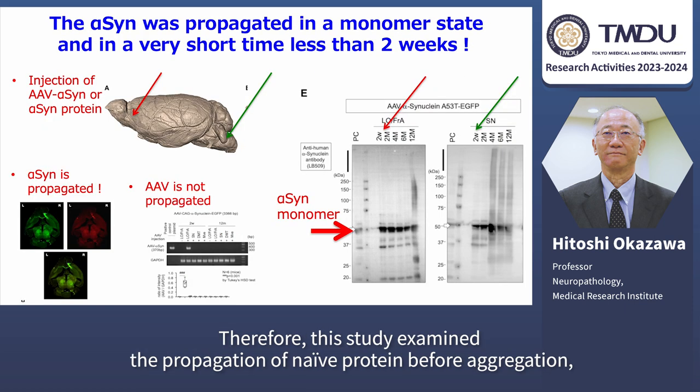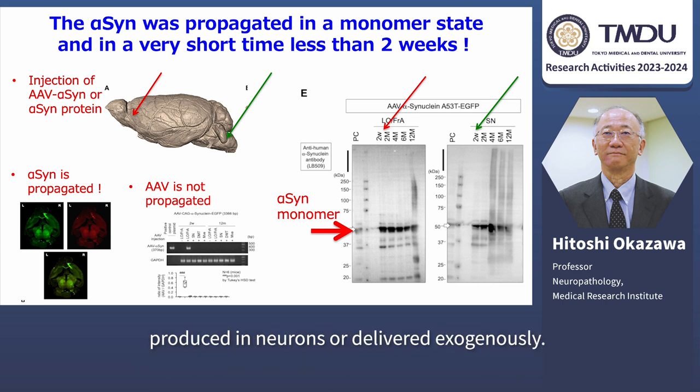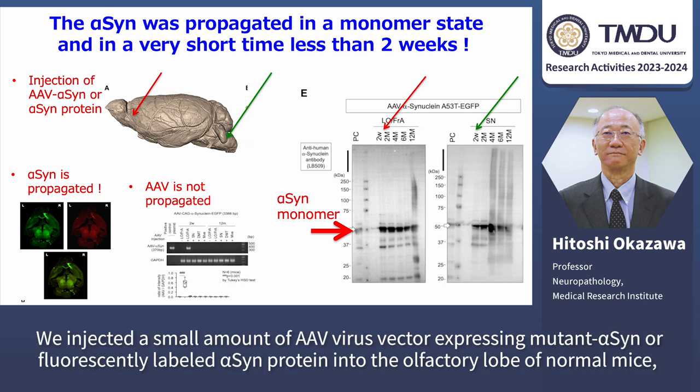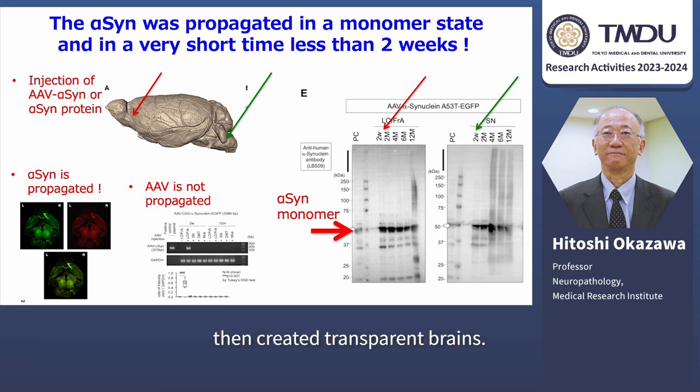this study examines the propagation of naive protein aggregation produced in neurons or delivered exogenously. We injected a small amount of AAV virus vector expressing mutant alpha-synuclein or fluorescently labeled alpha-synuclein protein into the olfactory bulb of normal mice, and then created transparent brains.